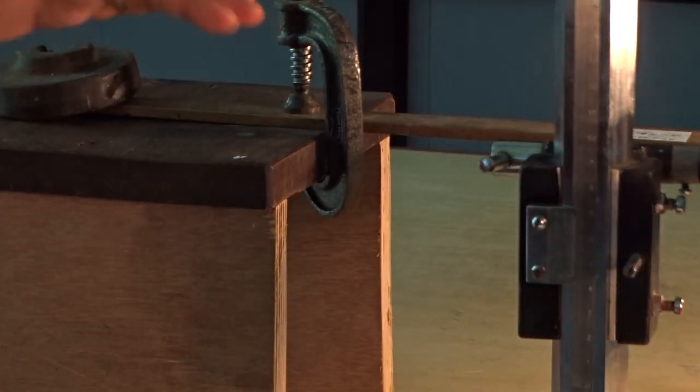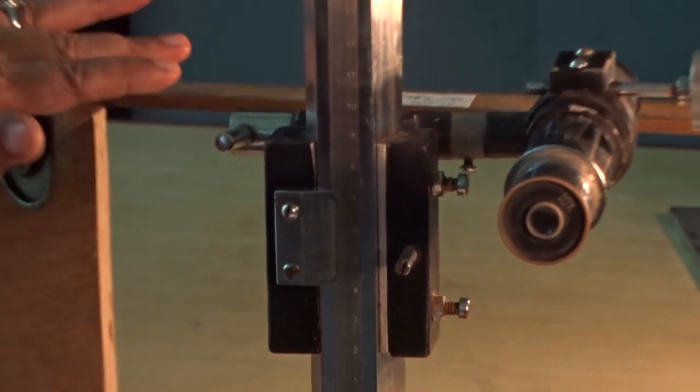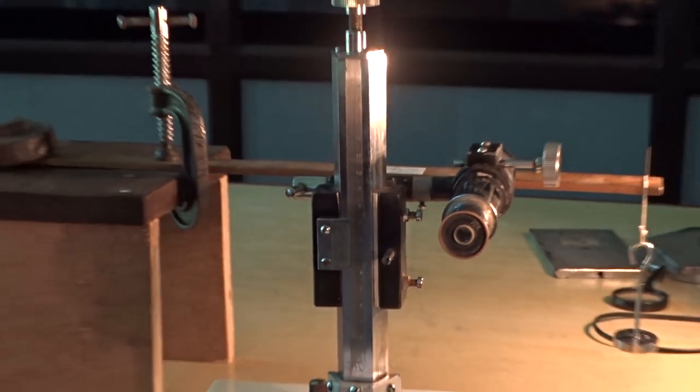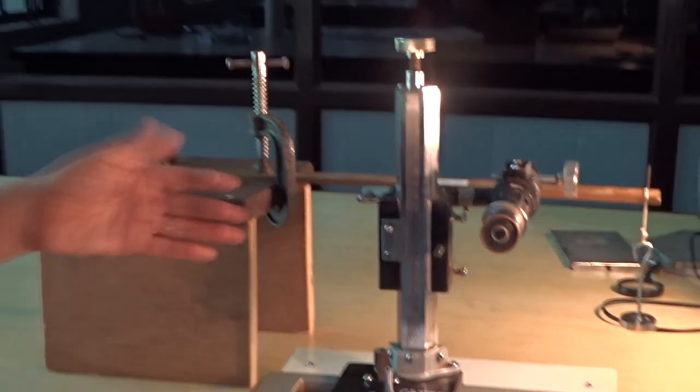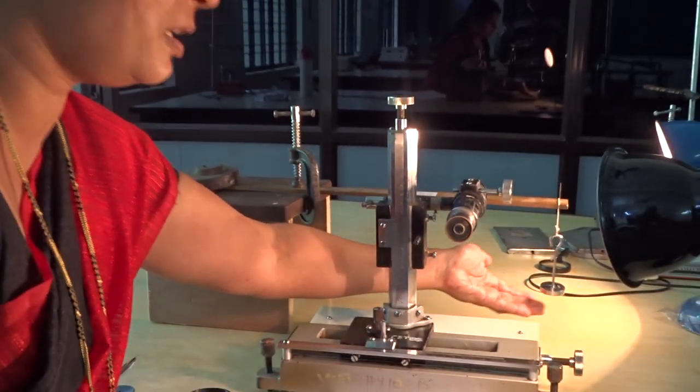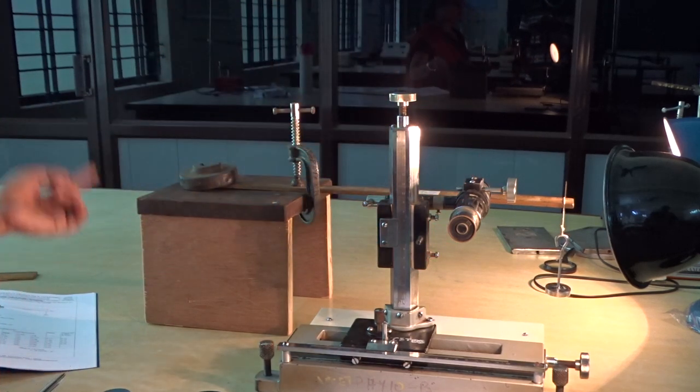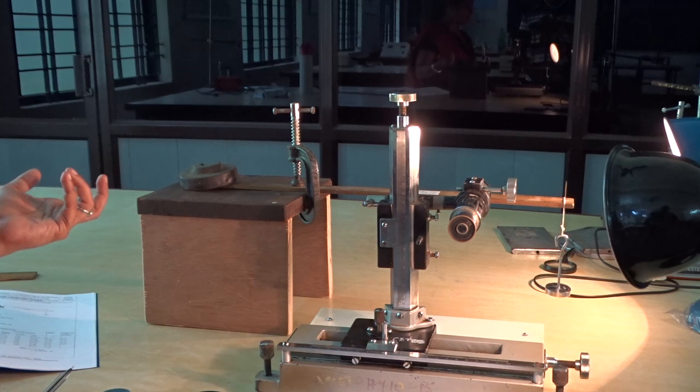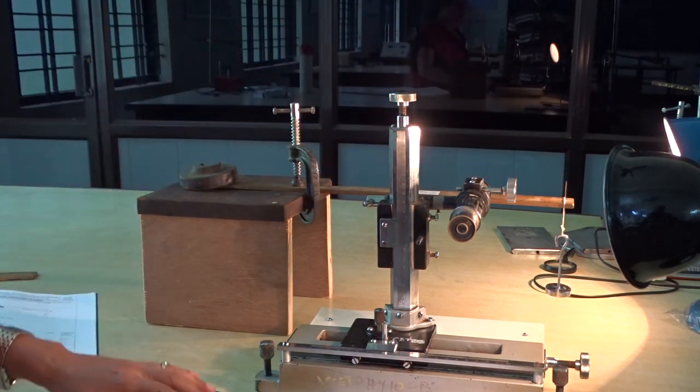Now, main aim of this experiment is to find out Young's modulus of the given beam. Given beam is a wooden scale. Young's modulus, it is the ratio of longitudinal stress to linear strain. Stress is due to this weight and strain occurs in this scale. To find out strain as well as the depression, we use this pin.